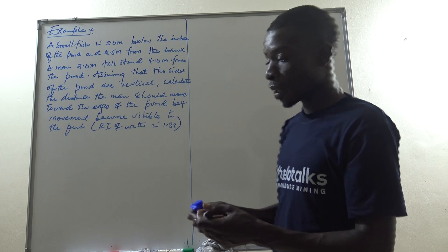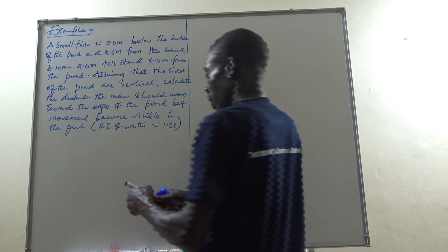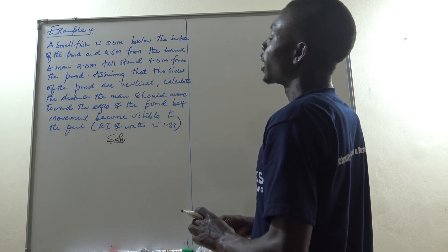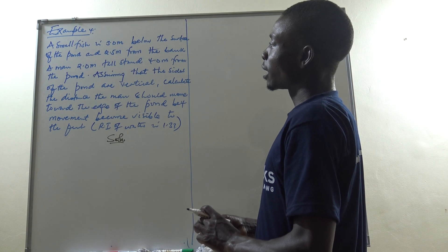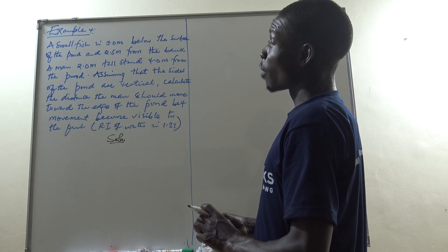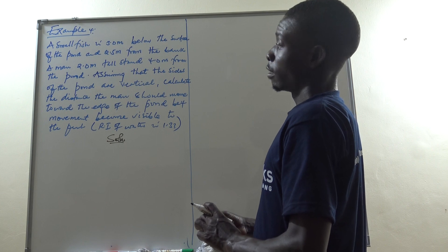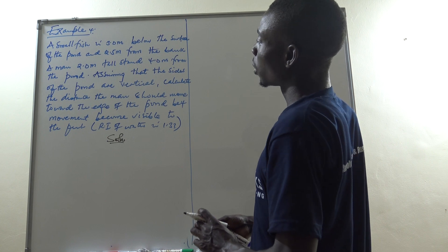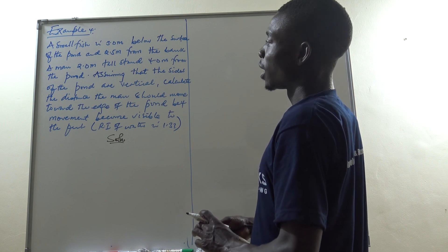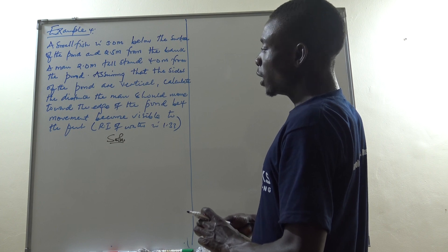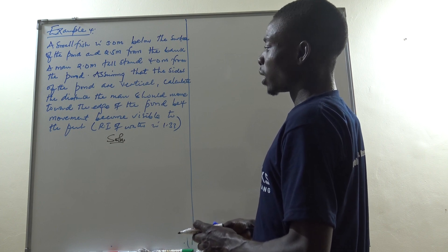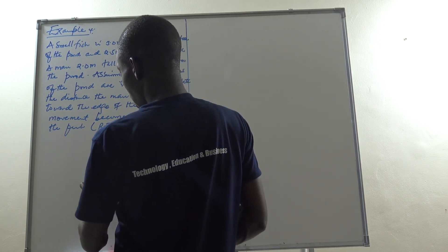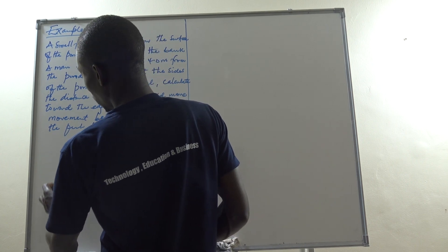This is our last example. A smaller fish is 3.0 meters below the surface of the pond and 2.5 meters from the bank of the pond. A man who is 2.0 meters tall stands 4.0 meters from the pond. Assuming the side of the pond is vertical, calculate the distance the man should move towards the edge of the pond before his movement becomes visible. Let me do some sketching here.